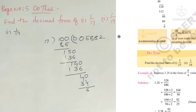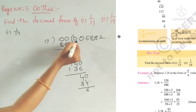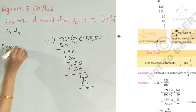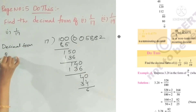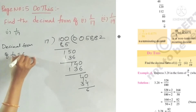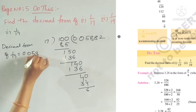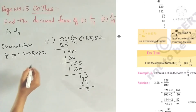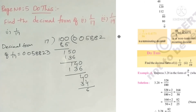We will continue the division. At least three digits after the decimal point. 17 fours are 68, 17 threes are 51. So the decimal form of 1 by 17 is equal to 0.05882.